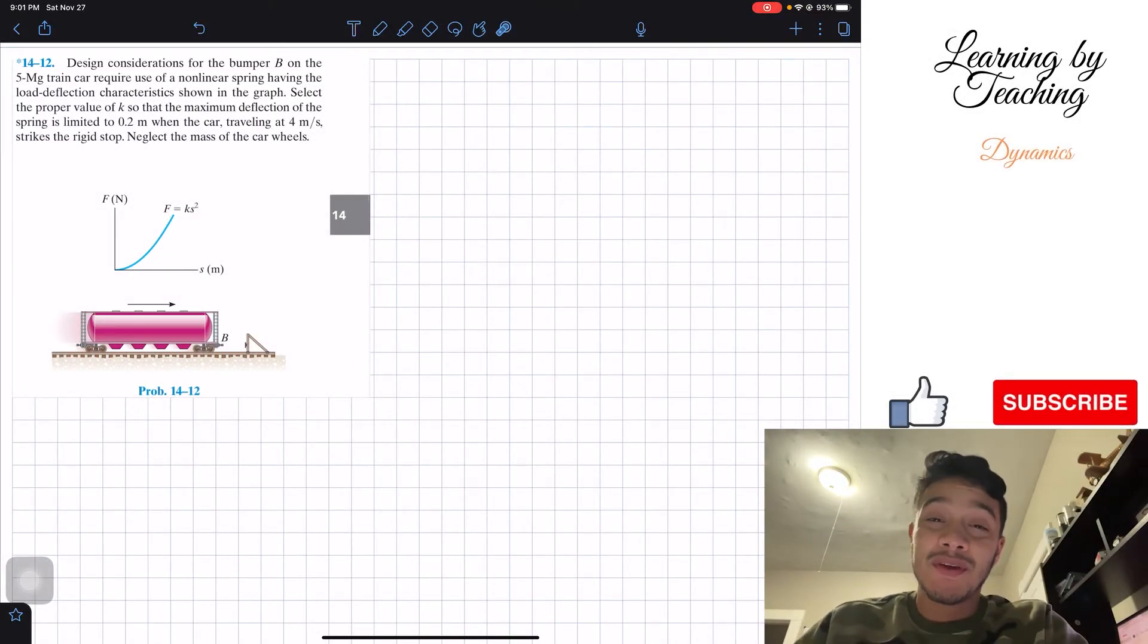Welcome back everyone to Learning by Teaching. Today we're in dynamics and we're going to solve problem 14.12. It says design considerations for the bumper on the 5 megagram train car requires use of a non-linear spring having the low deflection characteristics shown in the graph.